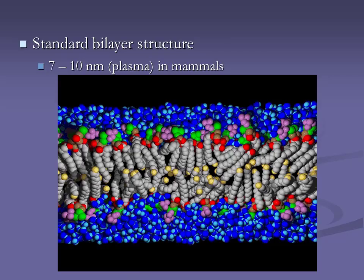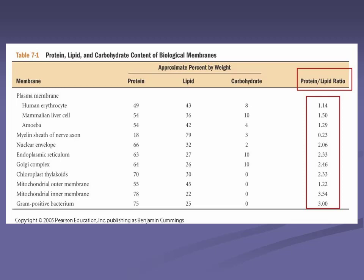Our polar groups interact with water on the outside and inside. The plasma membrane is not very thick — seven to ten nanometers. Compare that to the diameter of a red blood cell, which is eight micrometers. When we look at protein-to-lipid ratios by weight: a human red blood cell is 49% protein, 43% lipid; a liver cell is 54% protein, 36% lipid; an amoeba is 54% protein, 42% lipid — giving a ratio around one to one and a half.